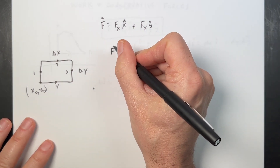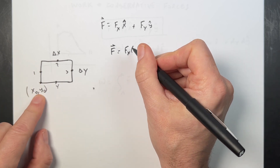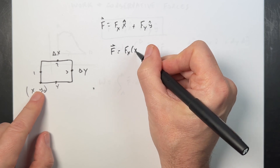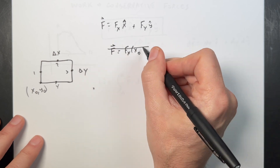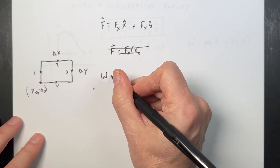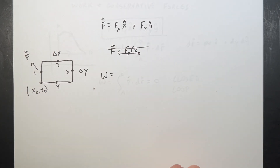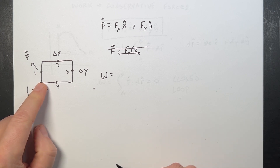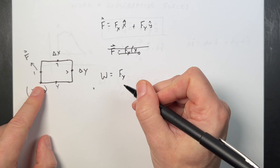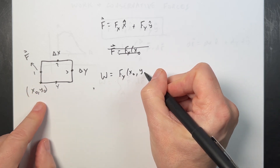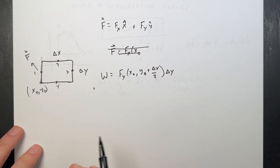On leg 1, I'm moving in the y direction so only the y component matters. The work is fy evaluated at (x₀, y₀ + Δy/2) times Δy. On leg 2, I'm moving in the x direction: work is fx evaluated at (x₀ + Δx/2, y₀ + Δy) times Δx. That's the work along parts 1 and 2.